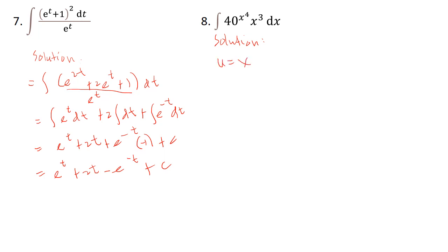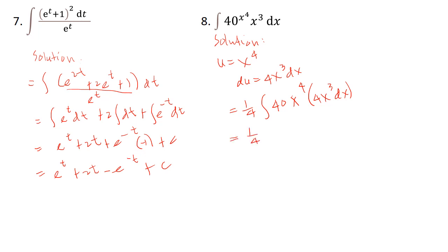Number 8: integral of 40^(x^4) · x^3 dx. Let u = x^4, so du = 4x^3 dx. This equals (1/4) integral of 40^(x^4) · 4x^3 dx, which gives (1/4) · 40^(x^4) over ln(40) plus C, or equivalently 40^(x^4) over 4·ln(40) plus C.